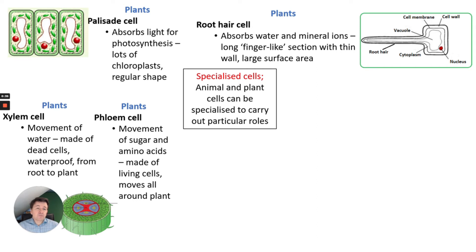Root hair cells are found in roots. There are millions of them. You'll notice by the shape they have a large surface area, and they also have very thin walls. They allow water and mineral ions to be absorbed, but the main key things are large surface area and very thin walls.